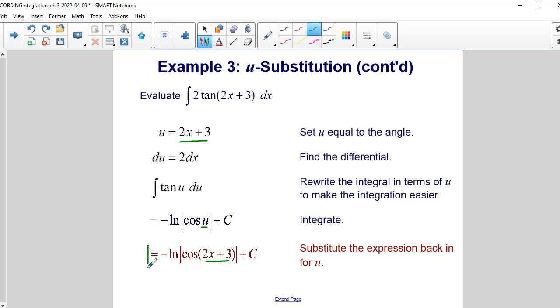And that's how we get our final expression minus the natural log of the cosine of 2x plus 3 plus c. And as a check, you can differentiate this and see if you get this integral up here.